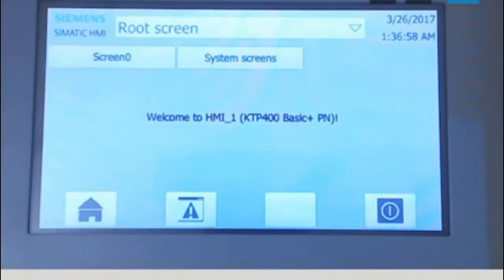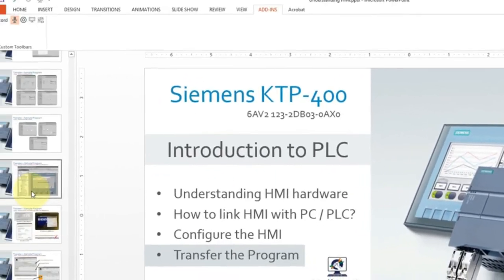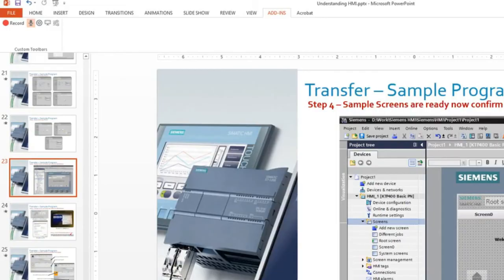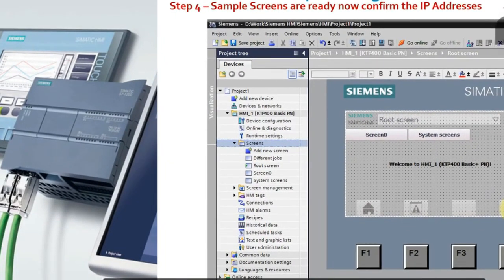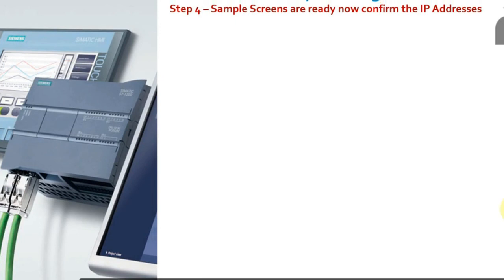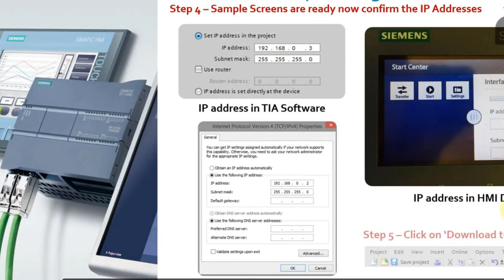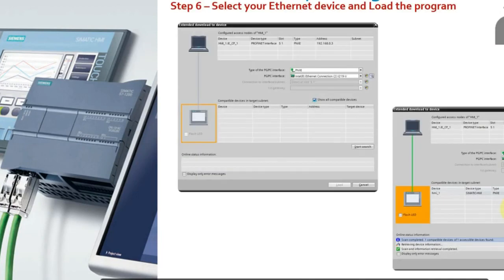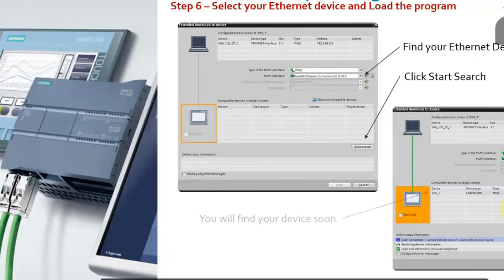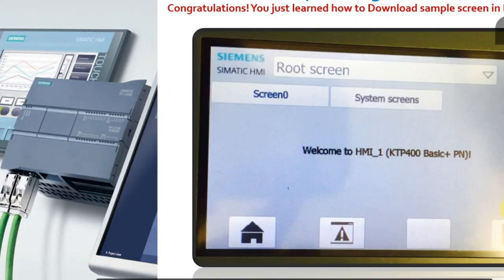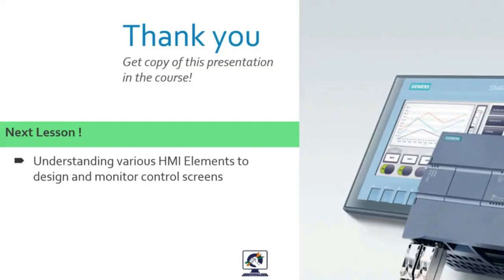That was the basic video on how to load a program into the HMI — though it's essentially a blank program since nothing is inside it yet. In the next video, we'll see how to load the main program, link it with the PLC, and create buttons. The sample screen is ready, and the presentation includes all the steps for reference. In the next lesson we'll explore the various HMI elements, how to design them, and how to use them to monitor and control parameters in the PLC.